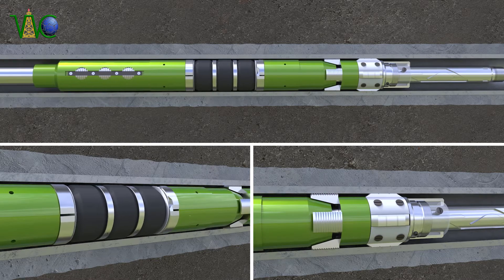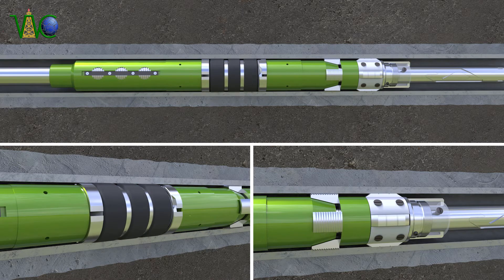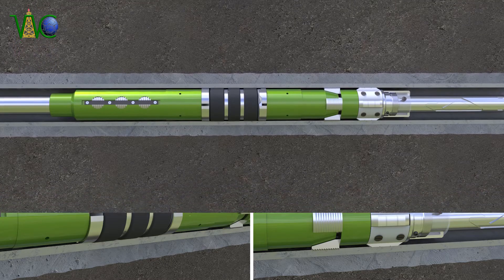When unloading the tool, the drive pin moves to setting position. Packing elements are squeezed in the radial clearance resulting in sealing the annulus.